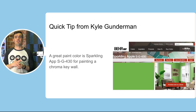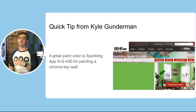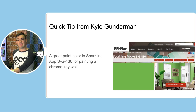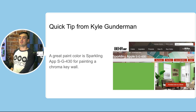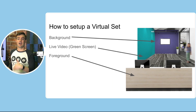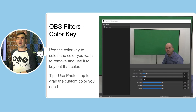Another tip from Kyle Gunderman, who you might see on our live show, is that he found a great paint color called Sparkling Apple SG430, which is great for painting chroma key walls. So to recap, a virtual set consists of a background file, a foreground file, and your live video.